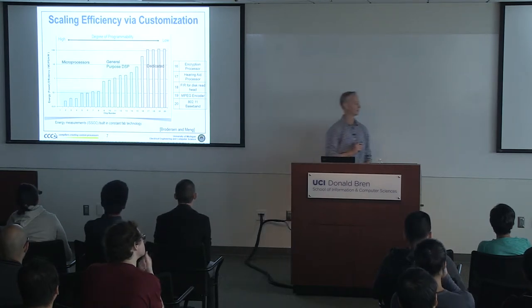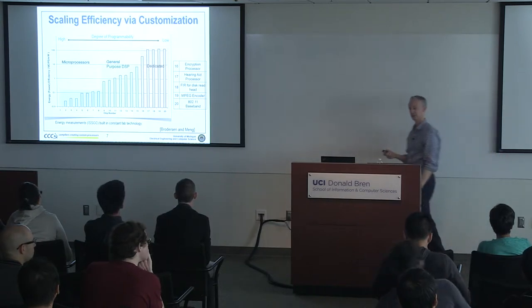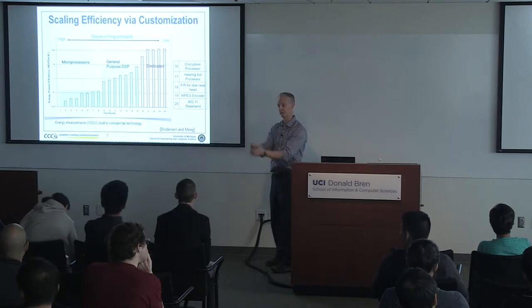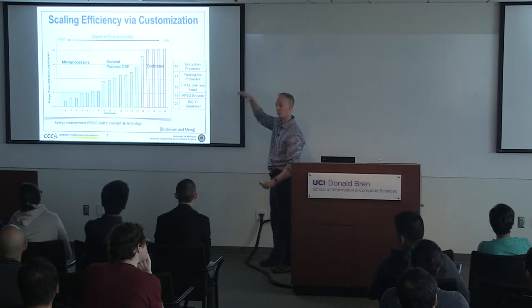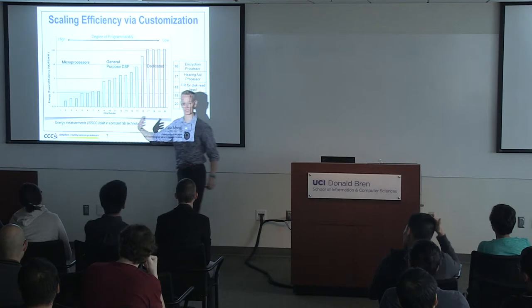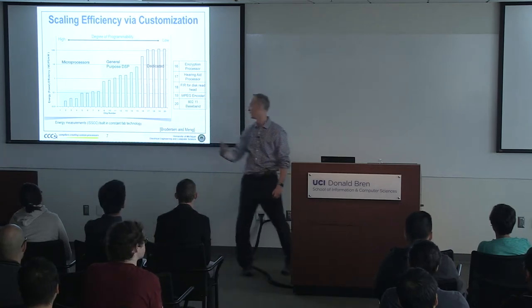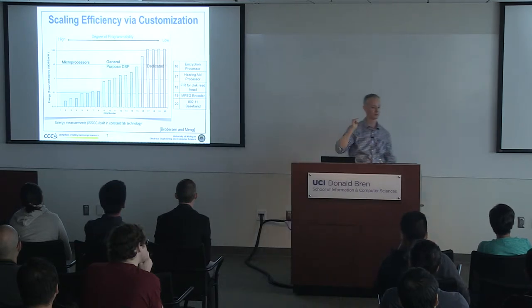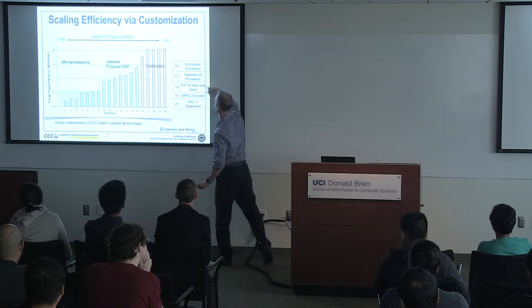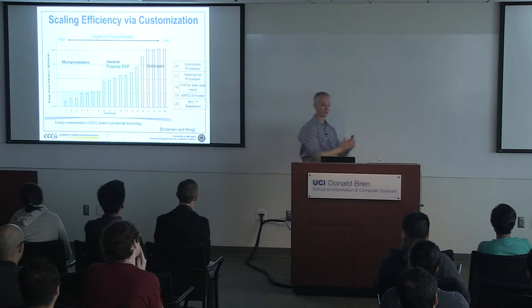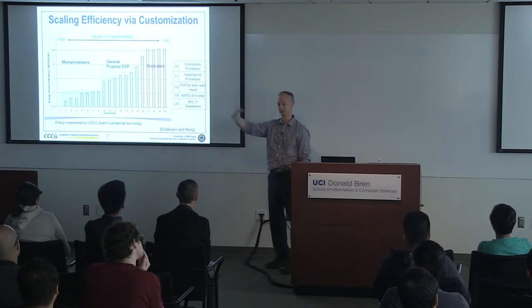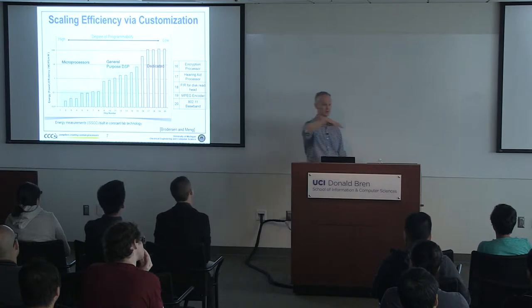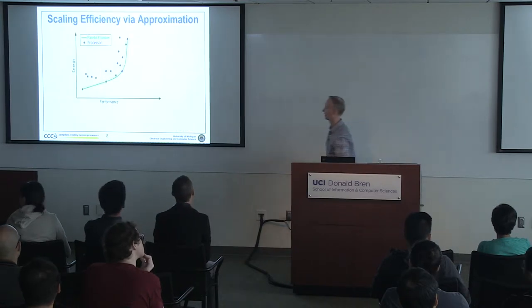This graph shows 20 chips from ISSCC, plotting energy efficiency on the y-axis. On the far left you have the microprocessor — fully programmable. As you progress right, you get more specialization: DSPs for signal processing, then dedicated hardware for MPEG and 802.11. Going left to right, you see three orders of magnitude improvement. But when you specialize to get that third order of magnitude, you have to know exactly what application you'll be running. If MPEG is the standard forever, you can burn special hardware, but if the algorithm keeps changing, burning special hardware is often impractical.